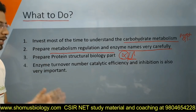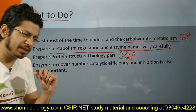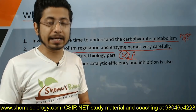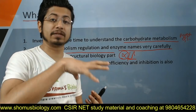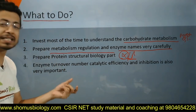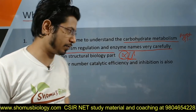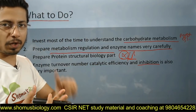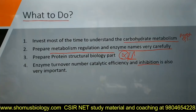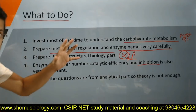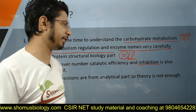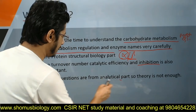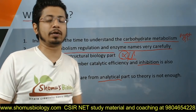Enzyme turnover number and catalytic efficiency problems are key problems CSINet asks all the time. Focus on kcat and turnover number, and also the types of enzyme inhibition - competitive, non-competitive, uncompetitive, and mixed inhibition - their differences and graphical representations. 60% of questions asked in the biochemistry Unit 1 are analytical in nature, and among those, 30-40% are mathematical.